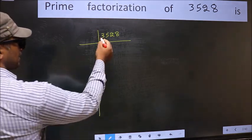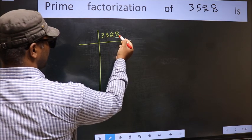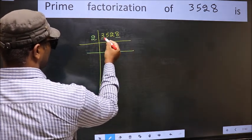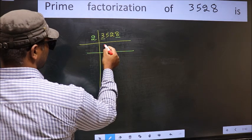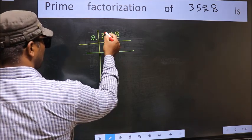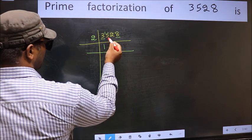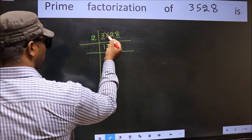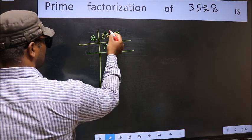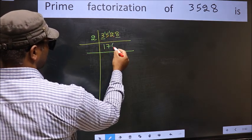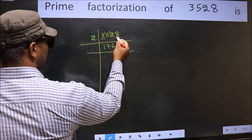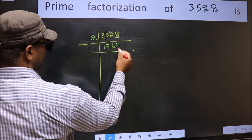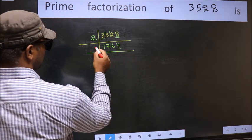Next. In this number, the last digit is 8, which is even, so take 2. First number 3 — a number close to 3 in the 2 table is 2, 1's 2. 3 minus 2 is 1, 1 carried forward 15. A number close to 15 in the 2 table is 2, 7's 14. 15 minus 14 is 1, 1 carried forward 12. We get 12 in the 2 table: 2, 6's 12. The other number 8 — we get 8 in the 2 table: 2, 4's 8. So 3528 ÷ 2 = 1764.